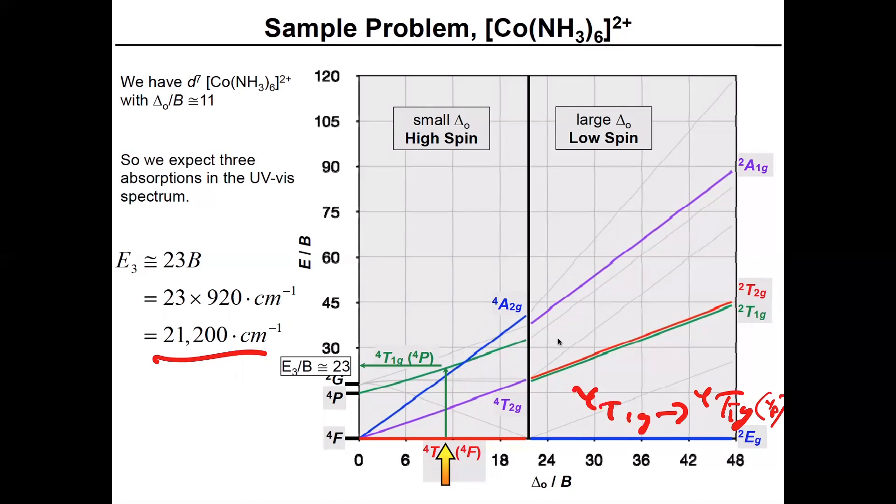And that's pretty much how you solve problems using Tanabe-Sugano diagrams. It's really a straightforward process. And the best way to figure out how to match up everything is, and I'm not showing it here, is if you just have this on pieces of paper, just use rulers to measure everything. And you'll be able to get pretty accurate transition energies and pretty accurate ligand field splitting energies from doing this.